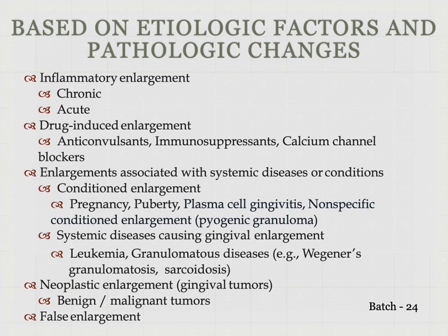Drug-induced is further sub-classified based on the type of drug into anticonvulsant, immunosuppressant, and calcium channel blockers. Associated with systemic disease is further divided into conditioned gingival enlargement and systemic disease causing gingival enlargement. Examples for conditioned enlargement are pregnancy, puberty, plasma cell gingivitis, and nonspecific conditional enlargement like pyogenic granuloma. Systemic diseases causing enlargement include leukemia and granulomatous disease. Neoplastic enlargement is sub-classified into benign or malignant.